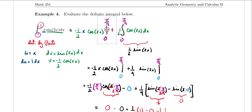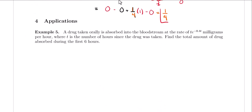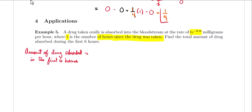Now let's take a look at a word problem. This problem tells us that a drug taken orally is absorbed into the bloodstream at a rate of t times e to the negative 0.4t milligrams per hour, where t is the number of hours since the drug was taken. We want to find the total amount of the drug absorbed during the first six hours. So we set up our integral: the amount absorbed is the integral from 0 to 6 of t times e to the negative 0.4t dt.